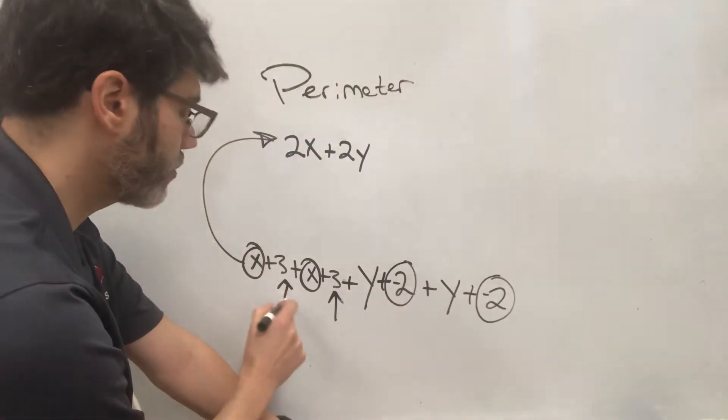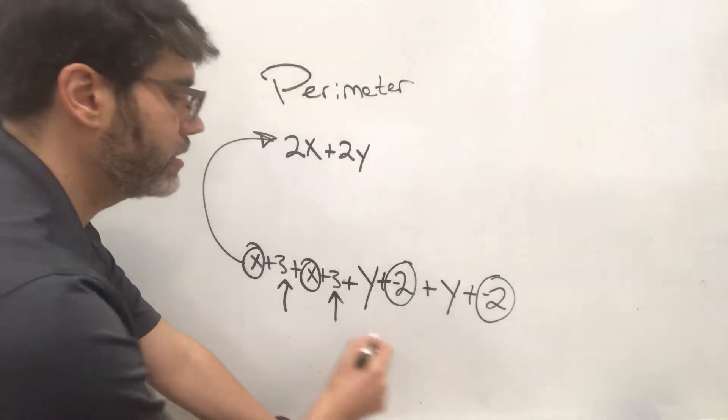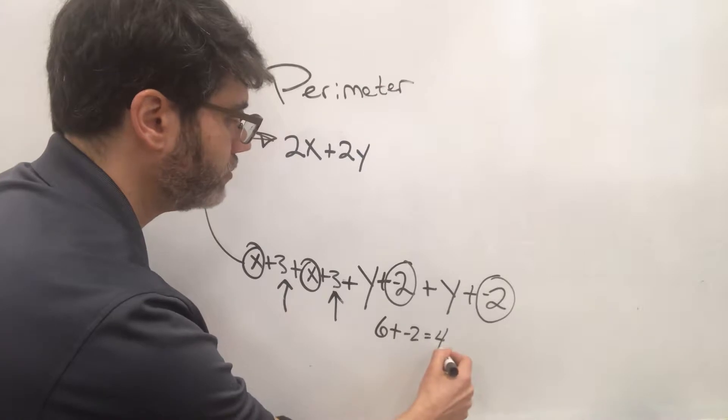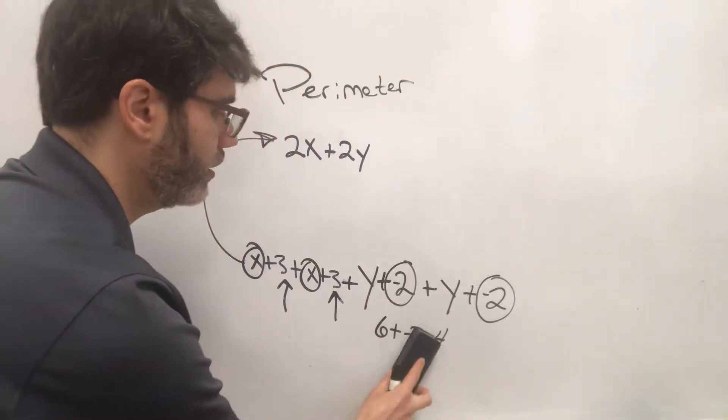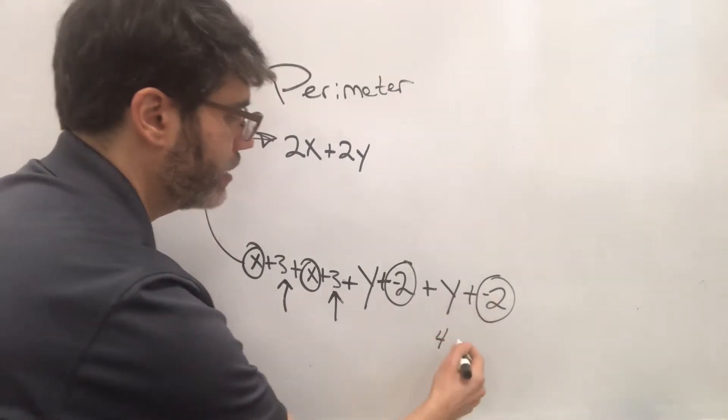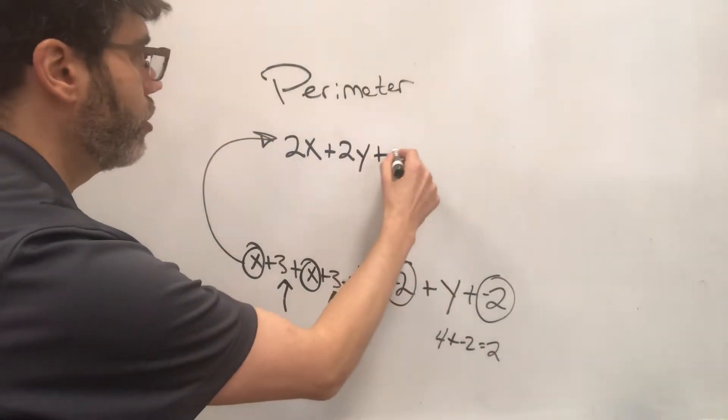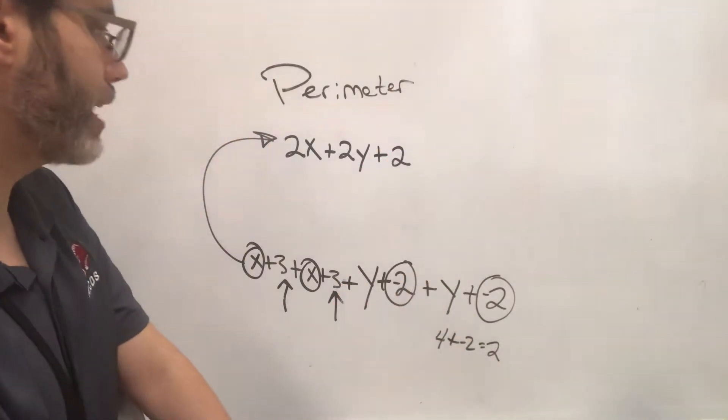All right, so let's combine 3 and 3. That's 6. 6 plus negative 2 is 4. And then now we have 4 plus another negative 2 will be 2. All right, so all of our constants boil down to 2.